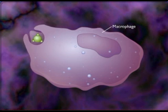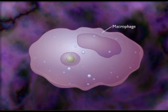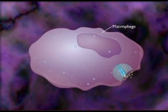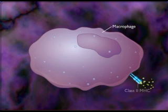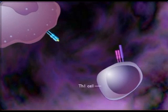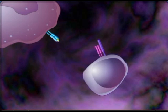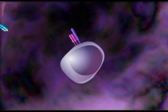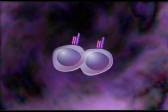The carrier protein with bound hapten is ingested by a macrophage, and the hapten peptide is then presented on the surface of the macrophage on a class II MHC. TH1 cells with T cell receptors capable of recognizing the hapten peptide antigen interact with the presented antigen, become activated, and increase in numbers.